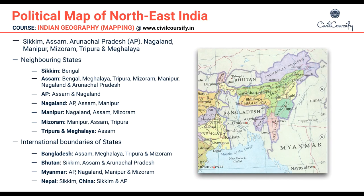In Northeast India we will be covering states such as Sikkim and the 7 sister states of Northeast India. Sikkim and the 7 sister states are Assam, Arunachal Pradesh, Nagaland, Manipur, Mizoram, Tripura, and Meghalaya. Let us look at the neighboring states of these states. For Sikkim, the neighboring state would be West Bengal.